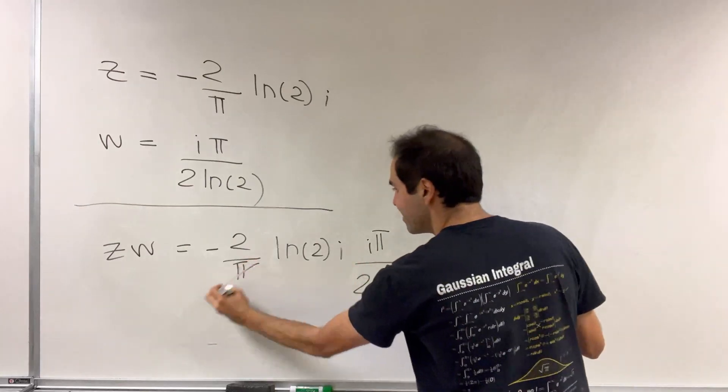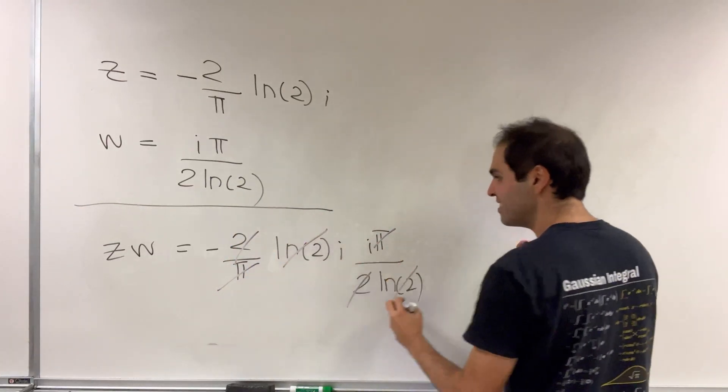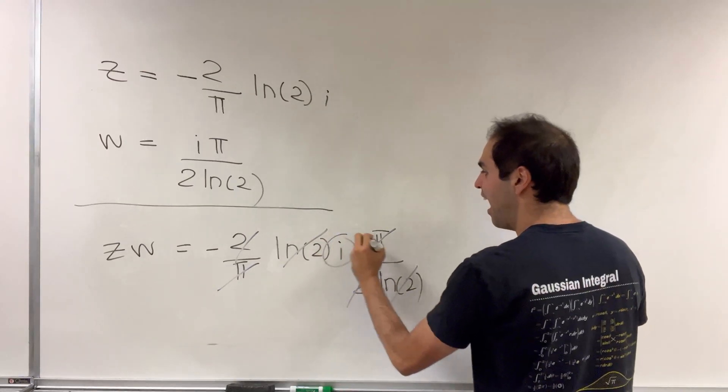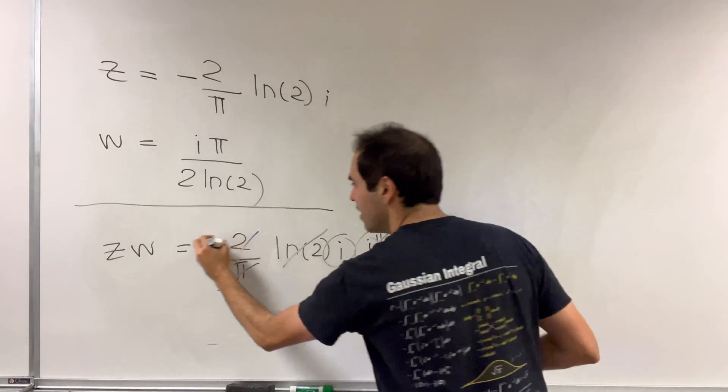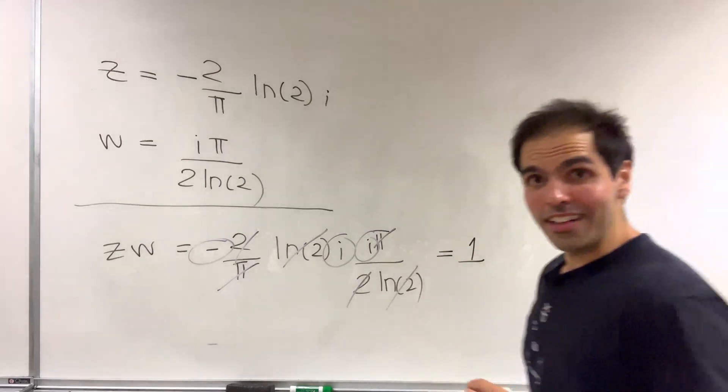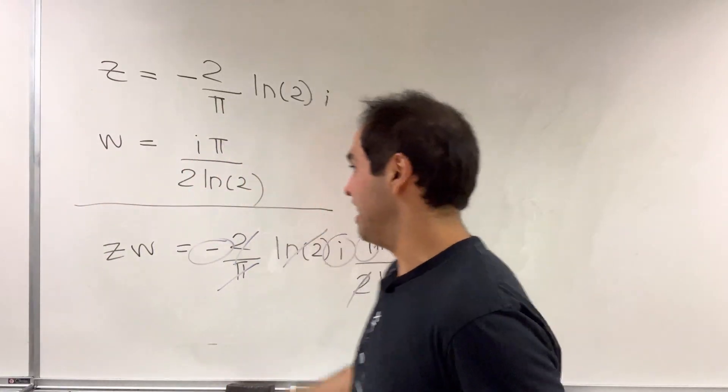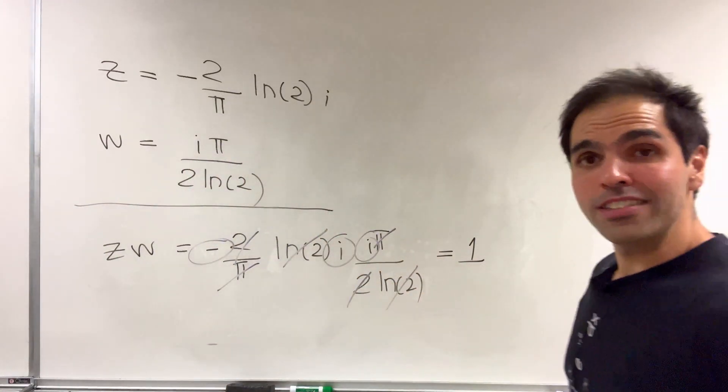And notice, the pi's cancel out, the 2's cancel out, the ln's cancel out, and i squared is minus 1, which then becomes 1. So while they're not equal, at least in the principal case, they are reciprocals.